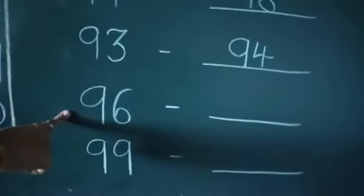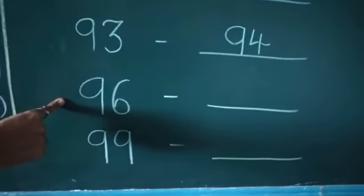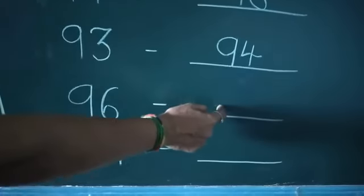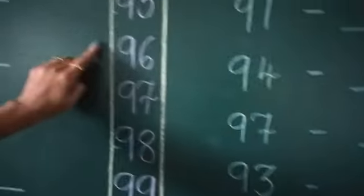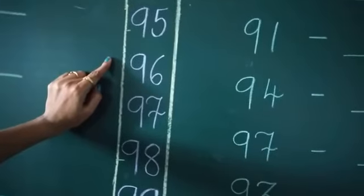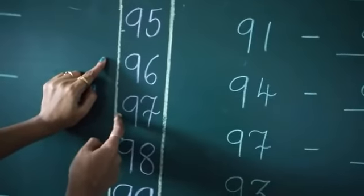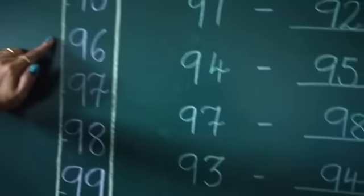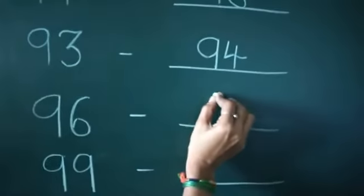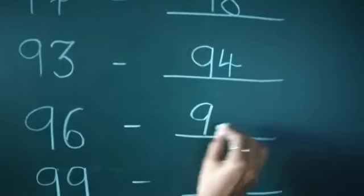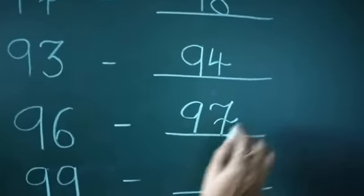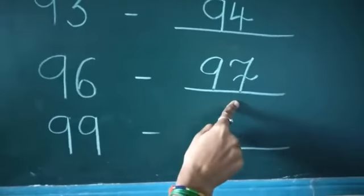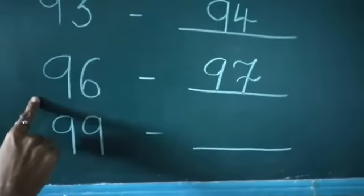Next, number 96. Which number comes after? Look at here — number 96. Which number comes after? Number 97. So number 97 comes after number 96.